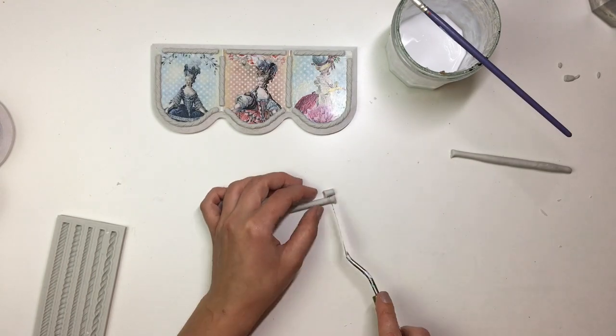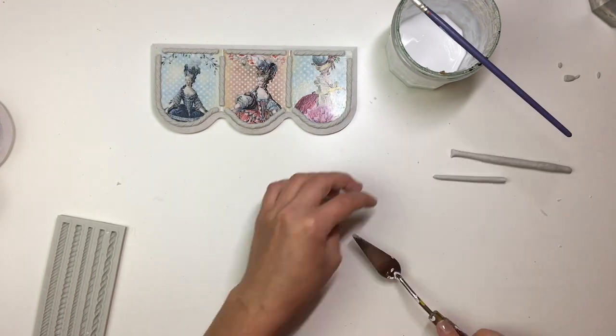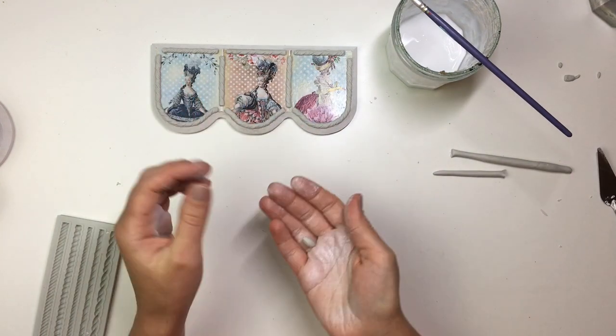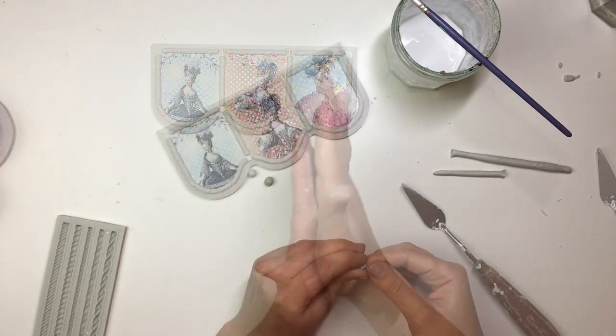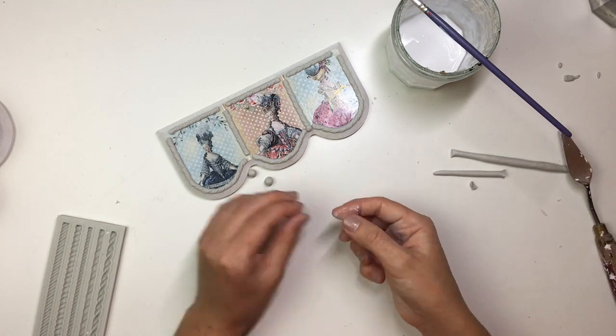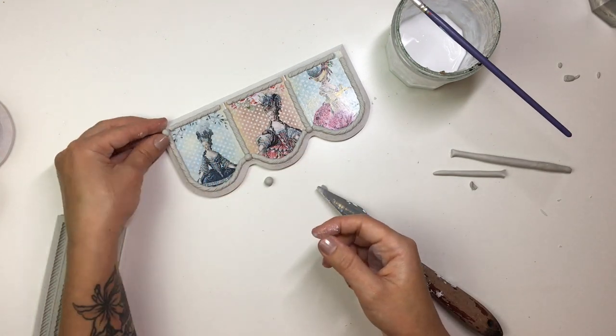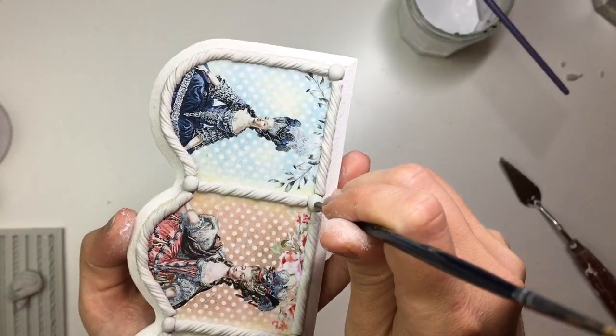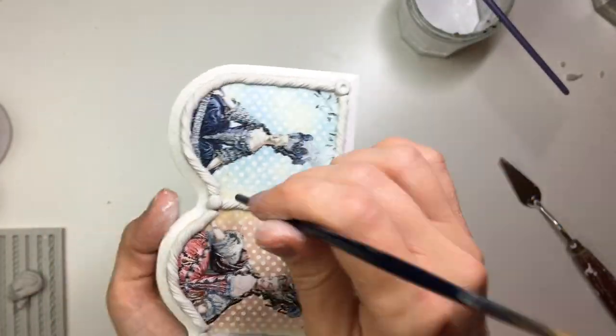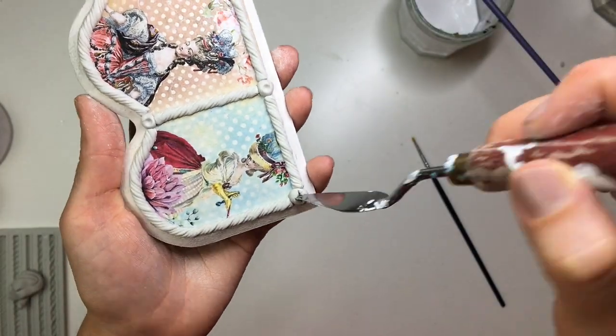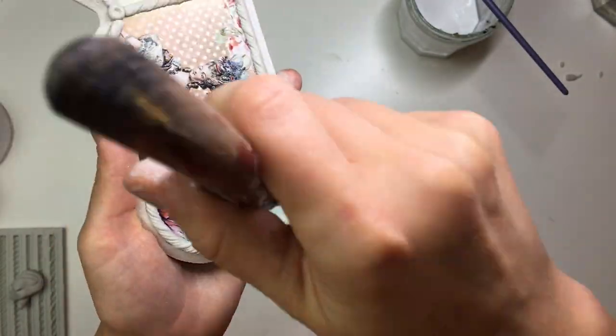Once the ropes were on, I made tiny little balls of clay that I cut into half and put them in between each of the ropes. I used the back end of a brush and my palette knife to shape the balls to make them look a little bit like screws.